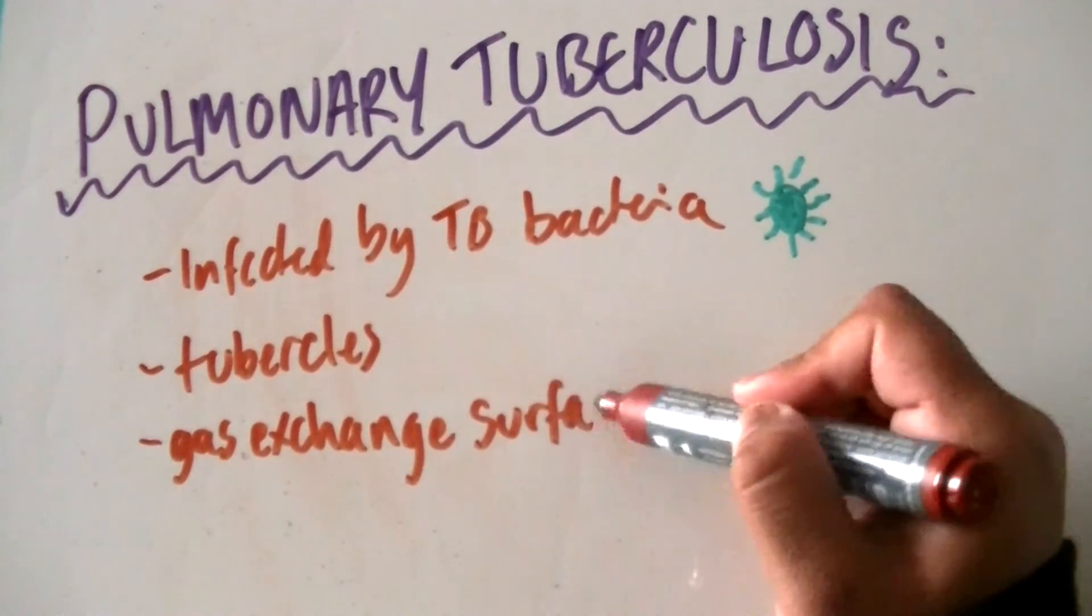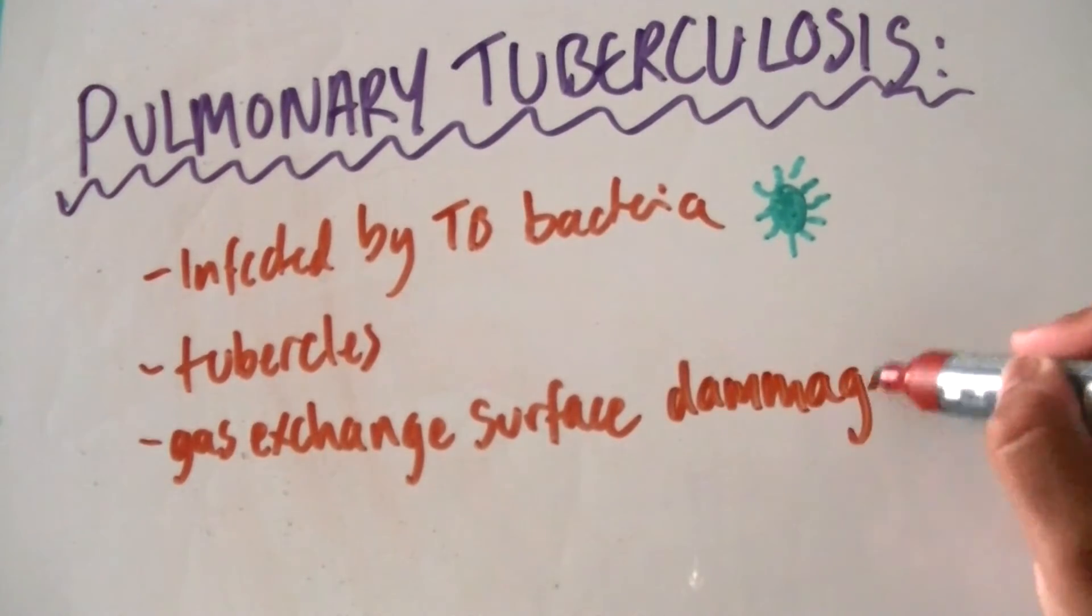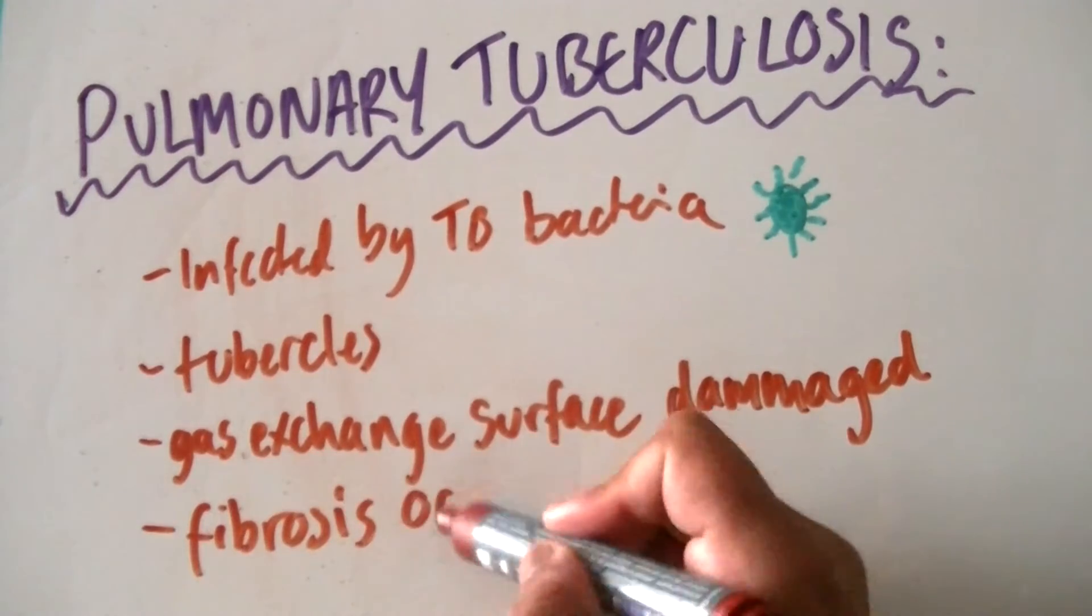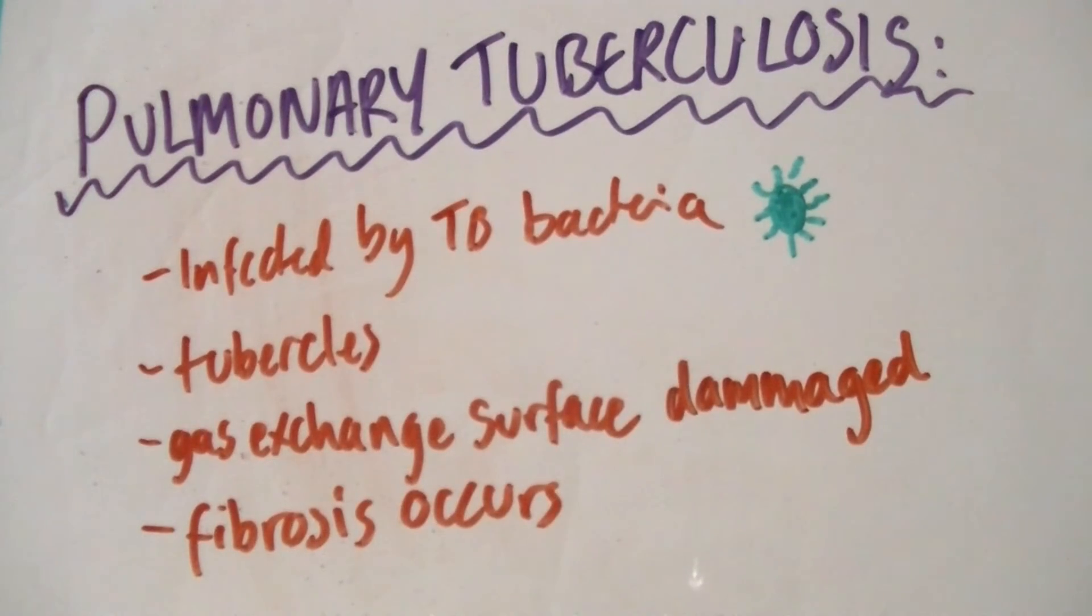A reduced tidal volume means that less air can be inhaled with each breath. In order to breathe, patients must breathe faster. Symptoms include persistent cough, coughing up blood and mucus, chest pains, as well as shortness of breath and fatigue.